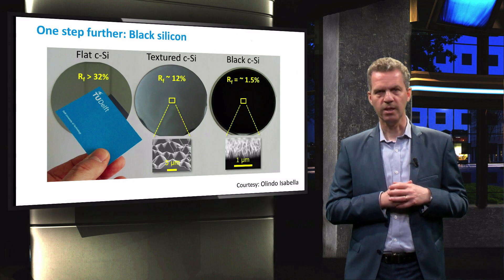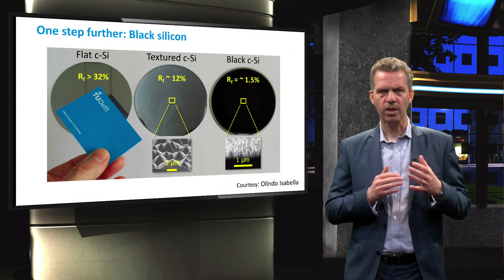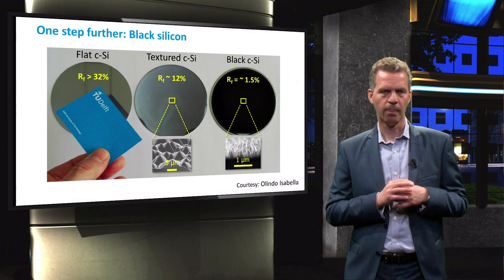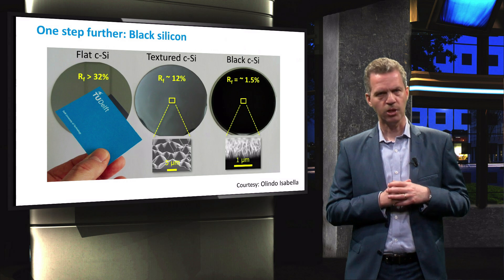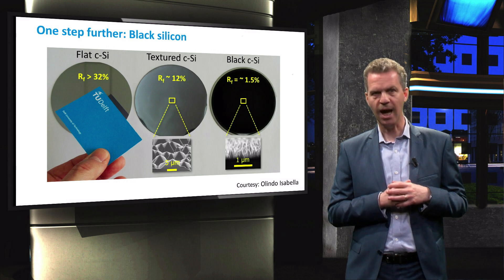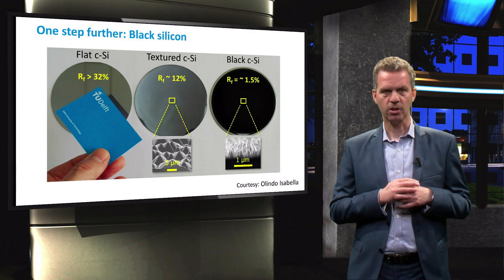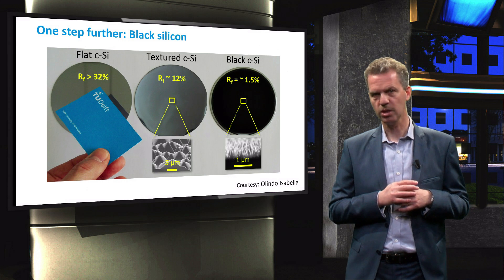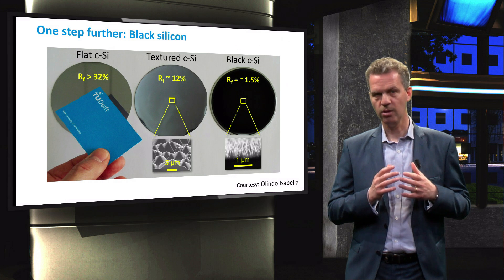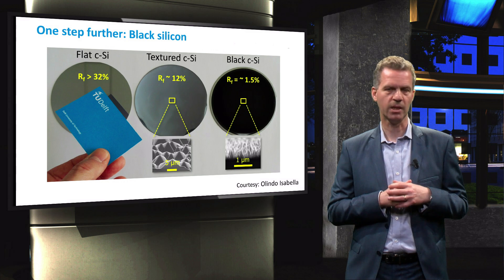In this slide you can see the effect of texturing on the appearance of a silicon wafer. A flat wafer, as shown on the left, appears shiny and acts nearly as a mirror. The random pyramidal texturing, as discussed, reduces the reflection considerably and the wafer looks dull, as you can see in the middle picture.